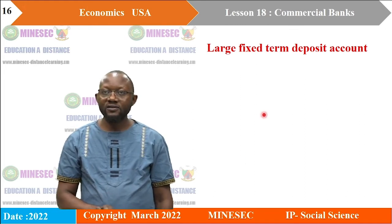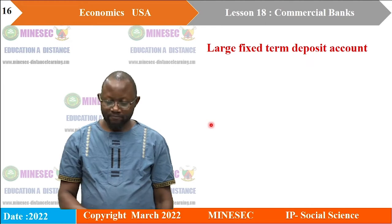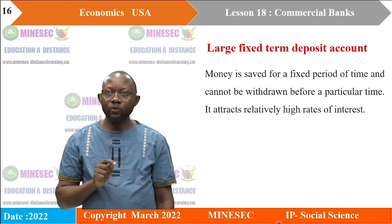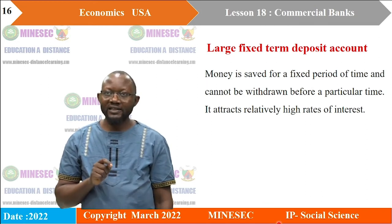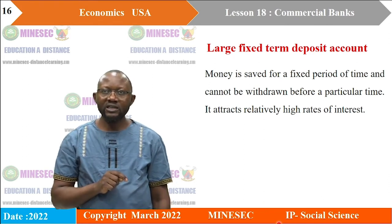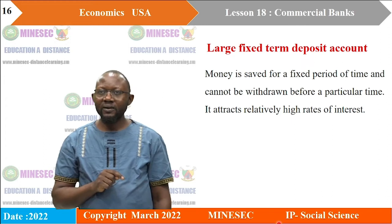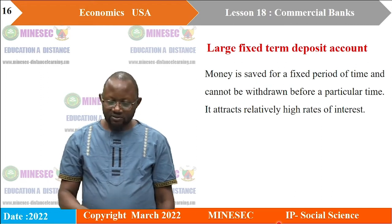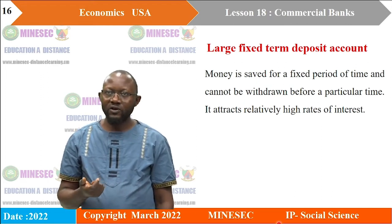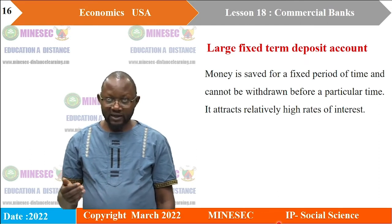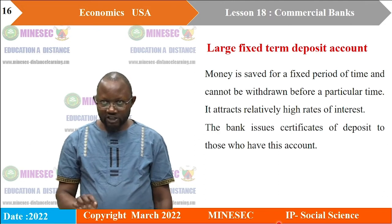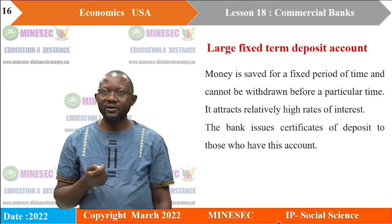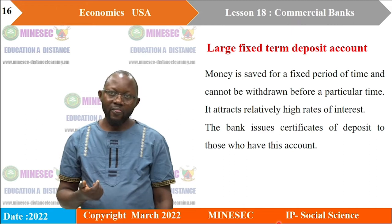The large fixed-term deposit account involves money saved for a fixed period and cannot be withdrawn before that time. It attracts relatively high rates of interest. Money is typically kept for three months to five years, usually involving large amounts — often around 500,000 francs. The bank issues a certificate of deposit to account holders, which can be discounted.